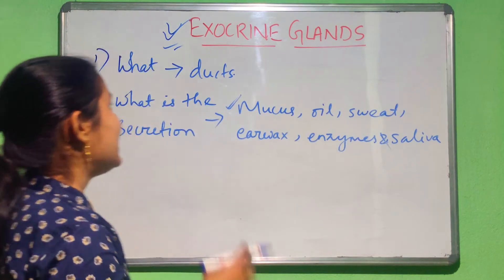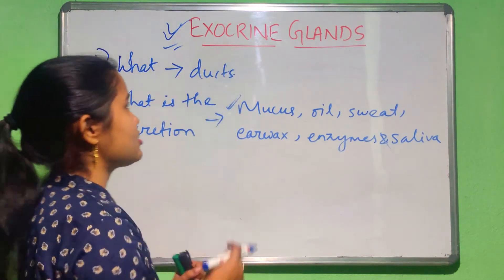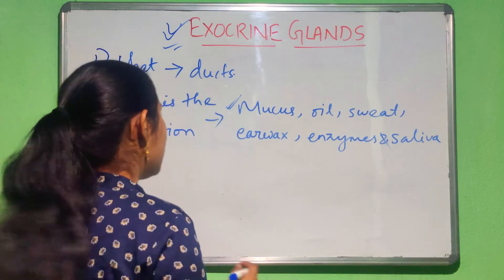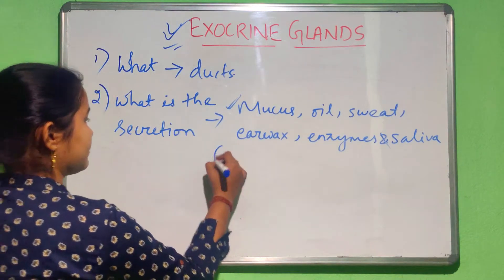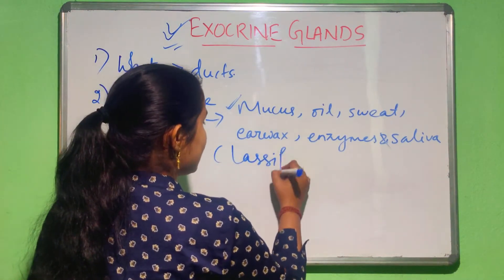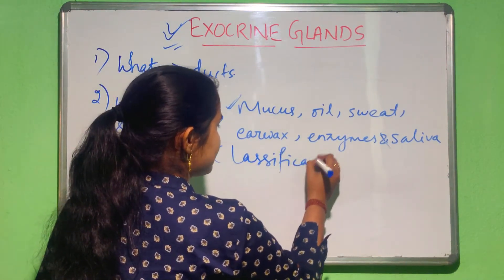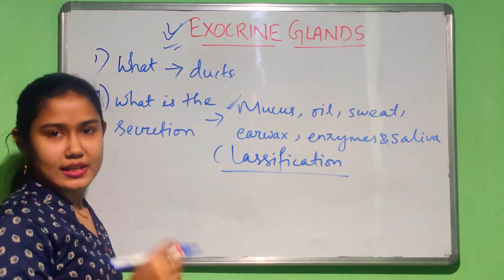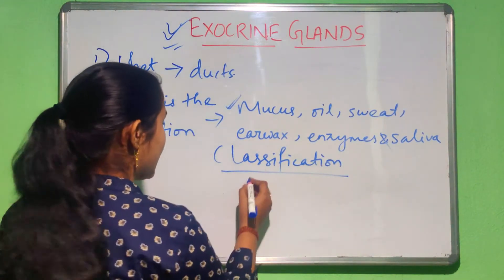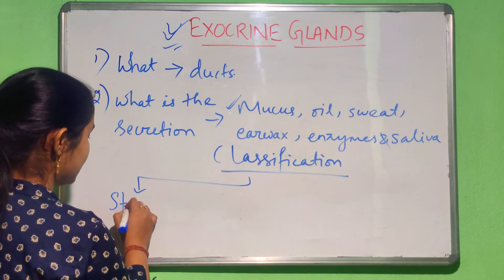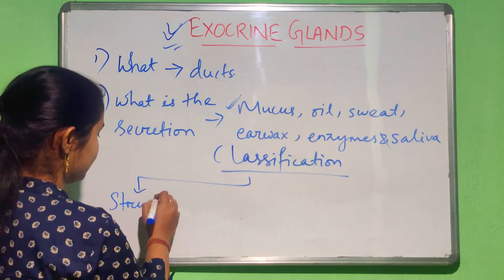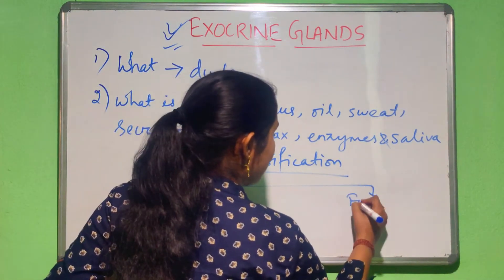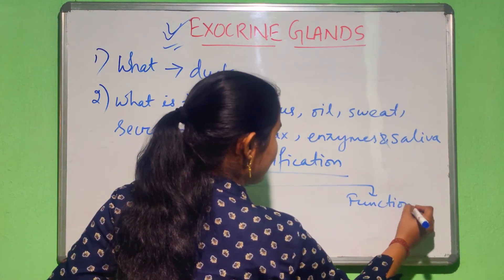Now let's study the classification of these exocrine glands. Considering the classification, there are two criteria: first is structure, and the second one is function. We will study structural classification and then functional classification as well.